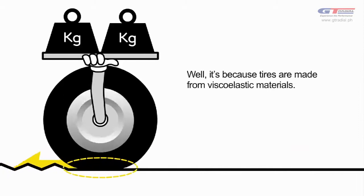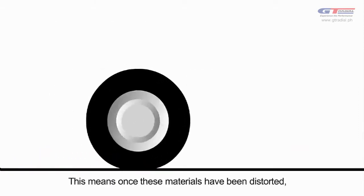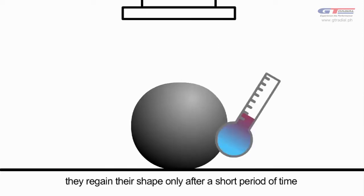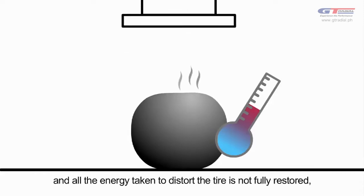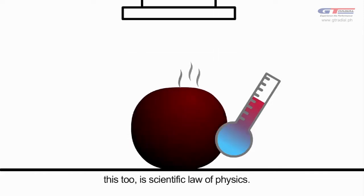Well, it's because tires are made from viscoelastic materials. This means, once these materials have been distorted, they regain their shape only after a short period of time, and all the energy taken to distort the tire is not fully restored. This, too, is scientific law of physics.